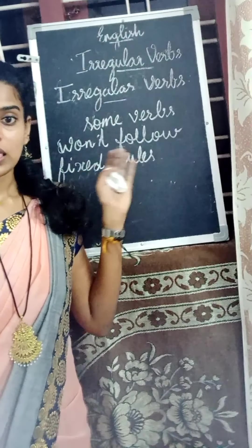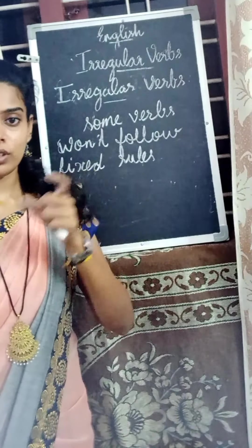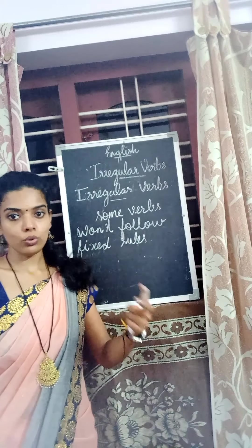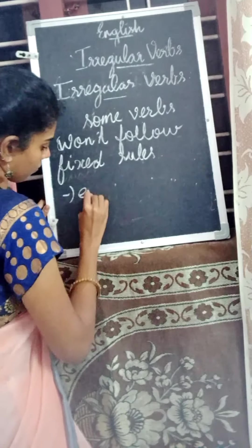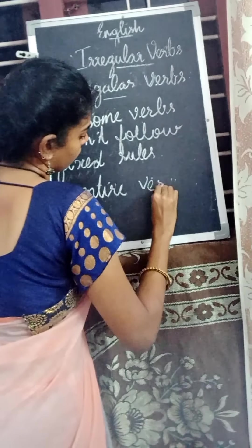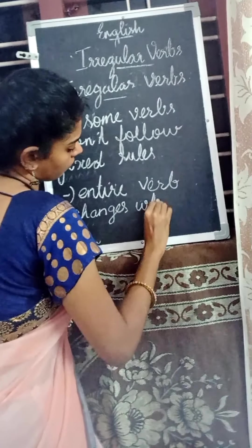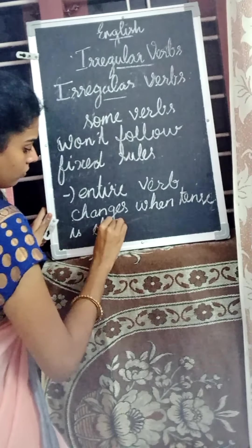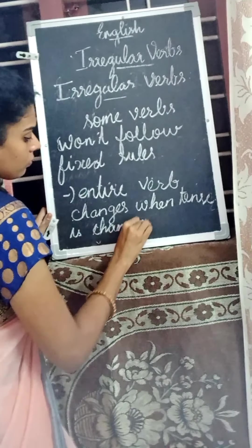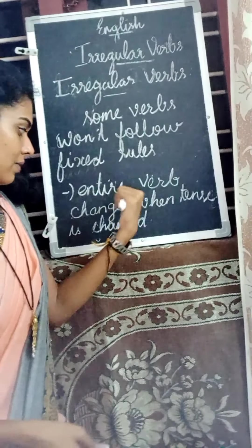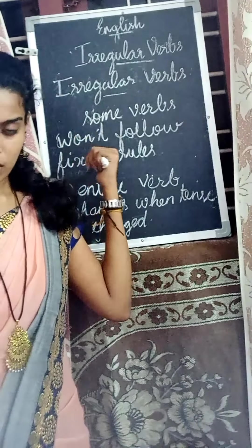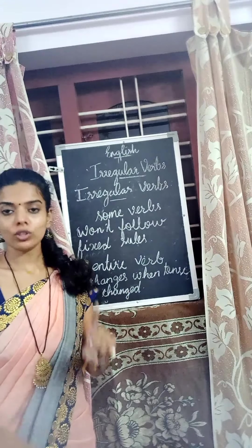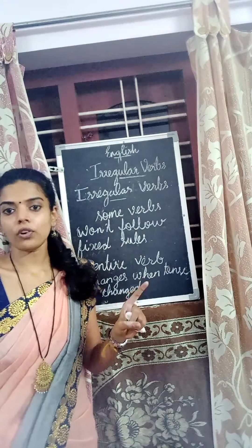In irregular verbs, the verb will change into another word when the tense is changed. In irregular verbs, there are some verbs which won't follow any grammatical rules. Those verbs are known as irregular verbs. The verbs which follow the rule are known as regular verbs. The verbs which won't follow the rule are known as irregular verbs.